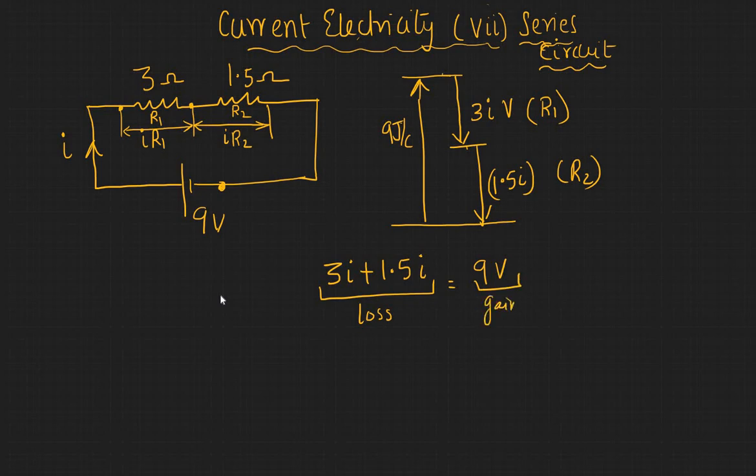You can say 3i plus 1.5i, which is a loss, would be equal to the gain which you gain from the battery. Or in other words, 9 is 4.5i, or i is 2 amperes. So thus you can find the current in the circuit. Before we generalize, this i is 2 amperes would imply that the drop across R1 is 6 volts and across R2 is 3 volts.